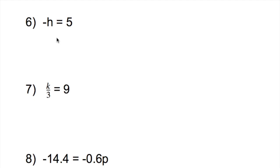For the second video, we're going to be doing one-step equation examples again, but this time focusing on multiplication and division. So first one: negative h equals 5.